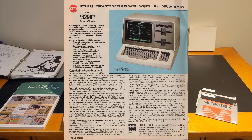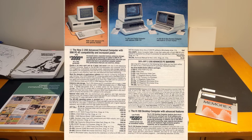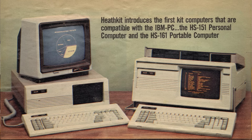The H89 computer was discontinued in 1983. By then, Heath had introduced their next generation of systems based on the H100, which could run either CP/M or Heathkit's version of MS-DOS. Later in the 1980s, they introduced IBM compatibles, selling them up to the 1990s when they left the kit business.